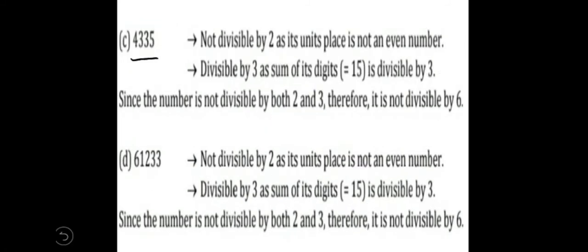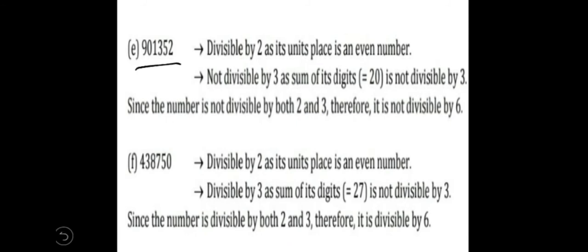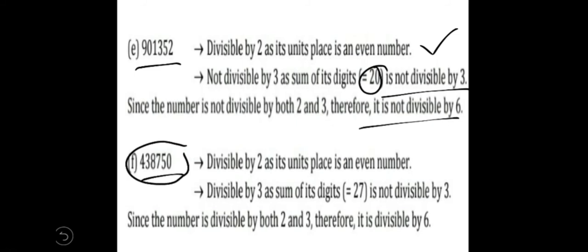4335 is an odd number, so it is not divisible by 2 and therefore not divisible by 6. The next number, 61233, is also an odd number — not divisible by 2 — so not divisible by 6. The next number is even, divisible by 2. Adding its digits: 9 plus 1 is 10, plus 3 is 13, plus 5 is 18, plus 2 is 20. Since 20 is not divisible by 3, this number is not divisible by 6. The next number is even, and adding its digits — 4, 3, 8, 7, 5 — gives 27, which is divisible by 3, so this number is divisible by 6.